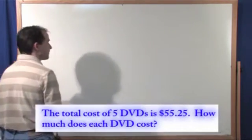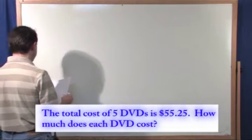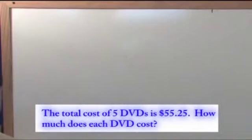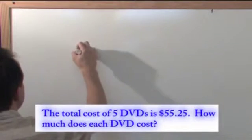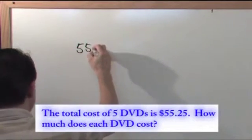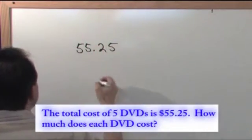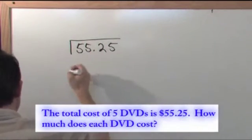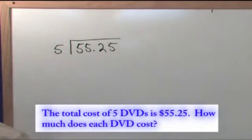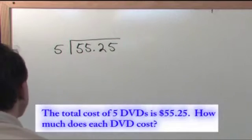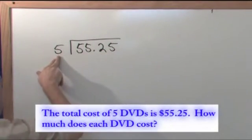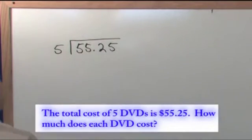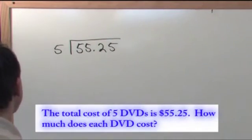So if we're going to do that, it would look like this. Now what we're going to do in order to solve this is we have our $55.25 and we want to divide into that the five DVDs. So what we're doing here is we know the total cost of the DVDs and we know that we're buying five of them, so by dividing them we'll find out how much each DVD costs.